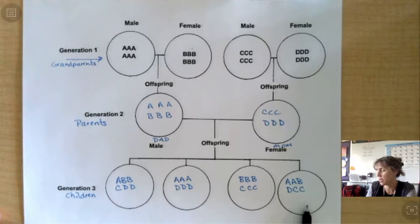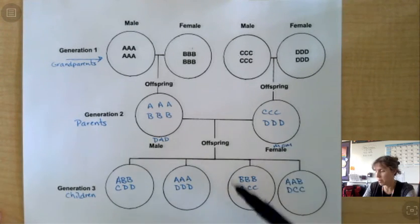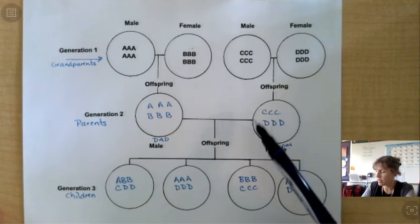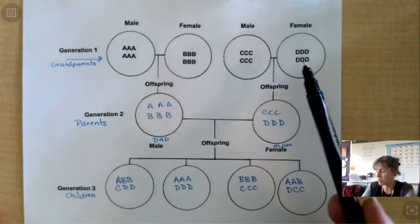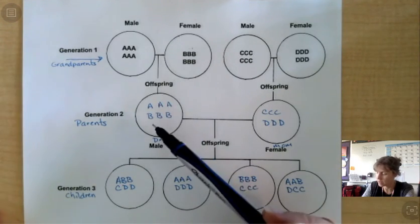And you can see how they share some characteristics, right? Each one of these children has a characteristic from their mom and characteristics from their dad. And this mom has characteristics, some from her dad and some from her mom. This dad has some from his dad and some from his mom.